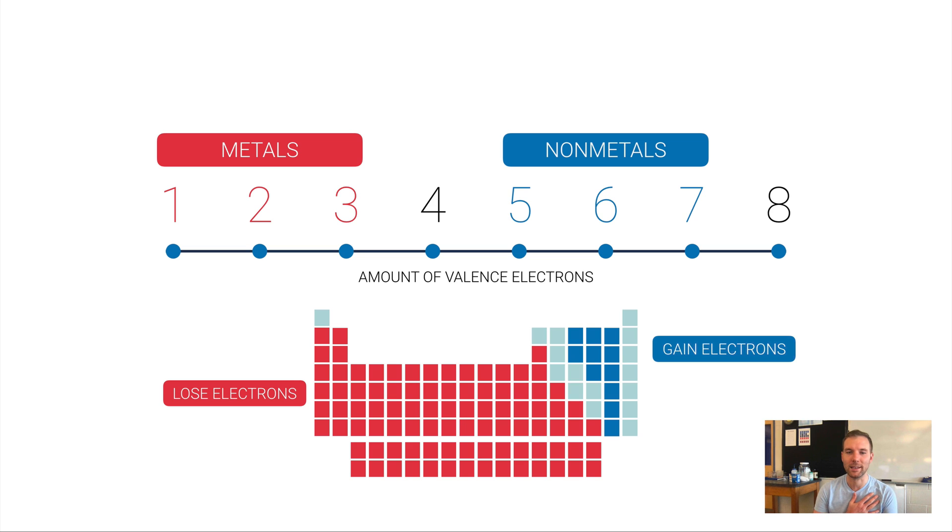You might be thinking, what happens if I've got four valence electrons? Do I want to lose or gain electrons? Really the truth is it can go either way. Sometimes if you're an element that has four valence electrons like carbon, you'd rather just share electrons with other elements. More on that as we get along.